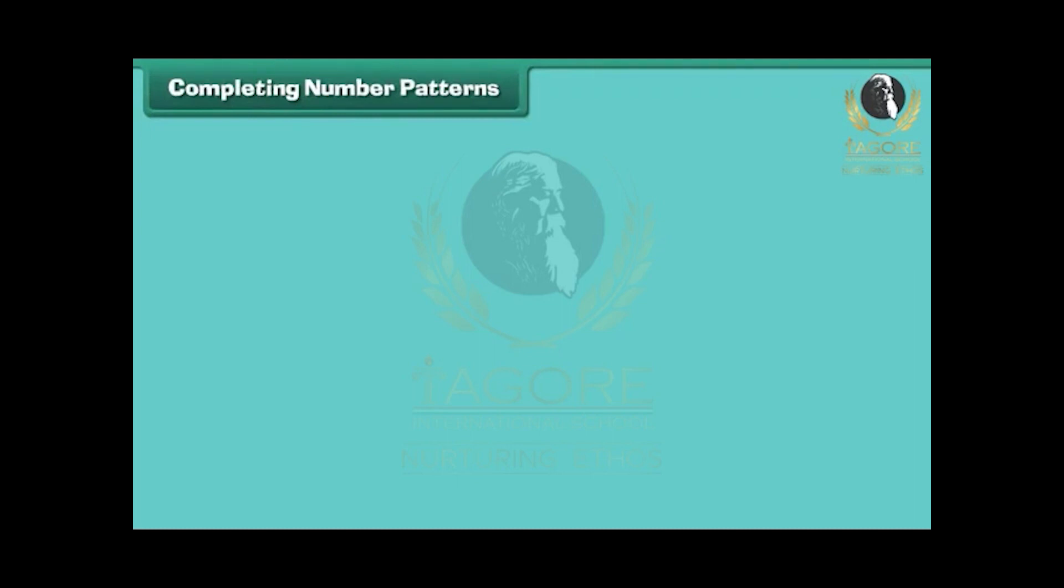Completing number patterns. Look at this number pattern. There are two numbers missing in the pattern. We can fill them if we understand how the pattern has been created. It is clear that in this pattern, numbers decrease by one at a time. We can find the missing numbers with the help of reverse counting.